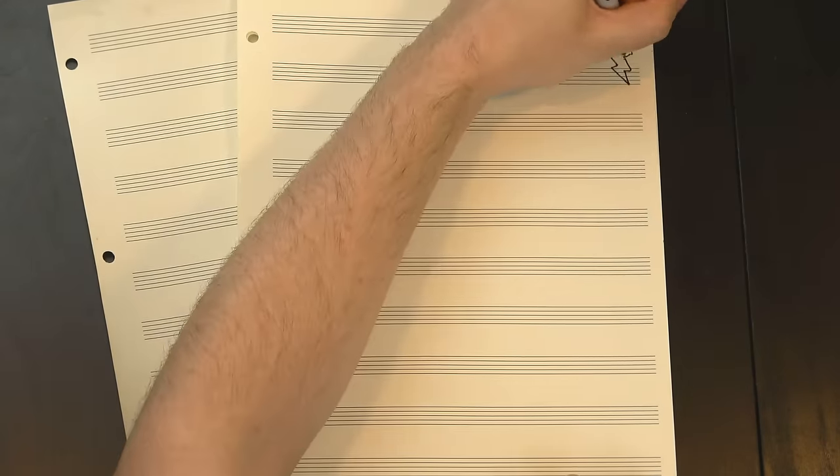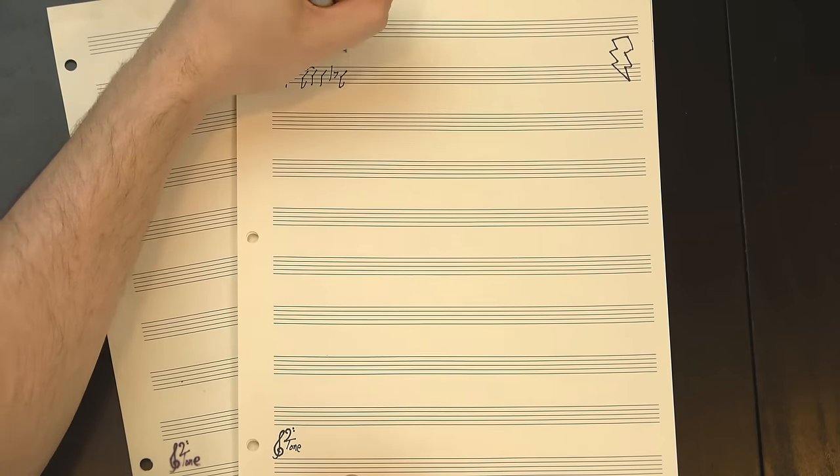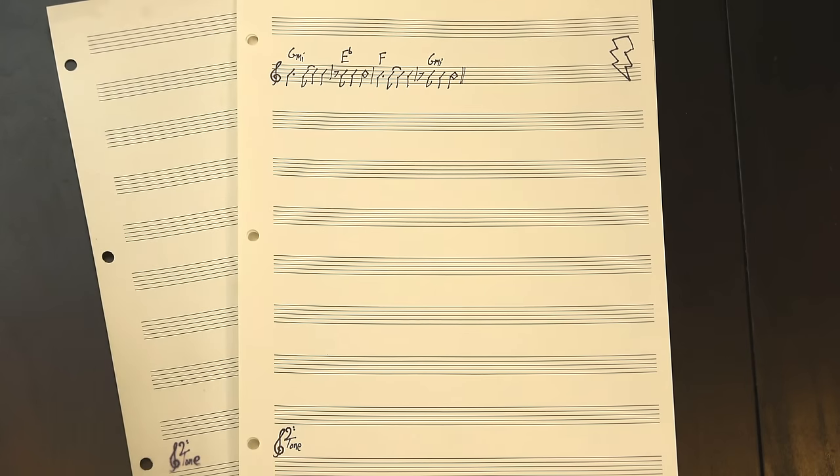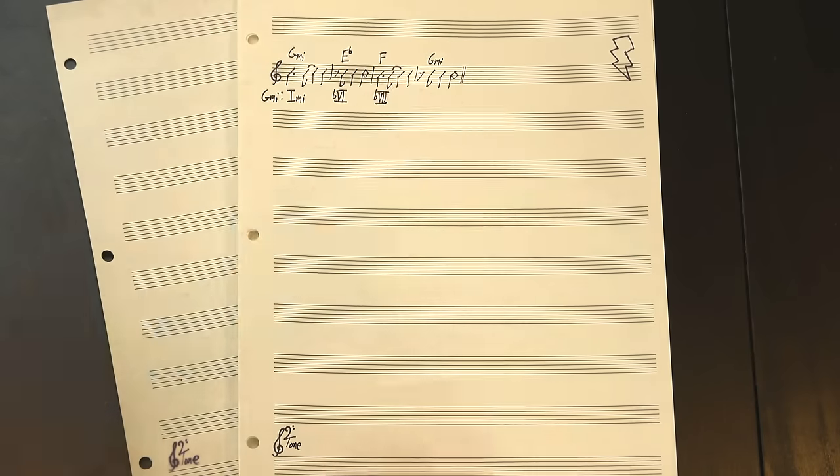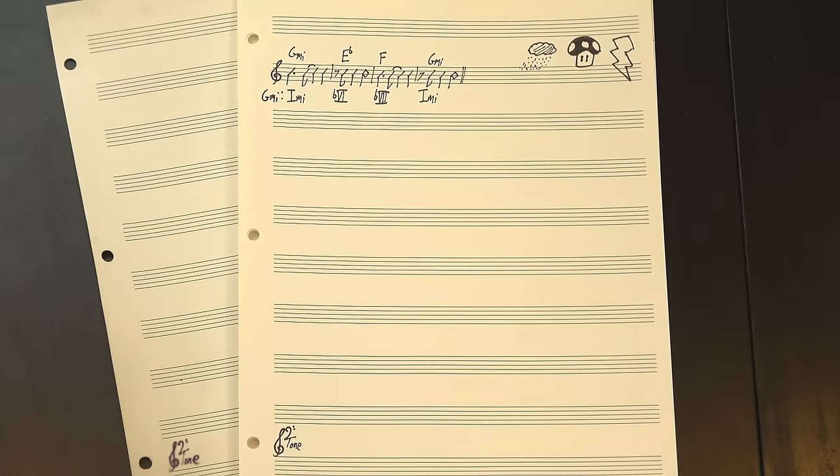Anyway, that leads us into the solo, which is over a completely new progression. Here, I think we have switched to G minor, starting on the I chord, dropping to flat-6, then walking back up to I, kind of like that Mario cadence from earlier but ending on a minor chord.